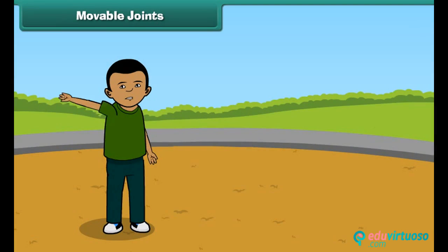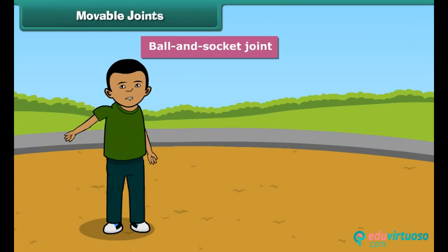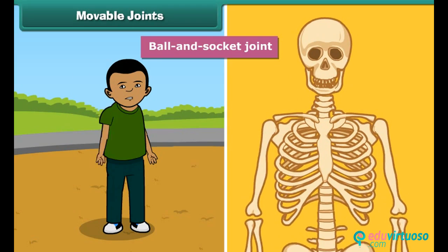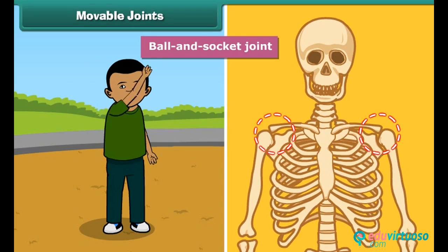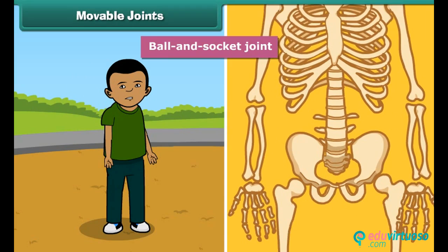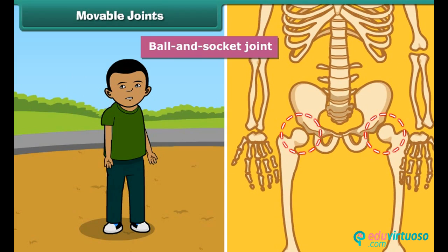The joints which join bones to make circular movement possible are called ball and socket joints. For example, the bone in the upper arm is fitted to the bone in the shoulder by a ball and socket joint. Similarly, the thigh bone is fitted to the hip bone by a ball and socket joint.